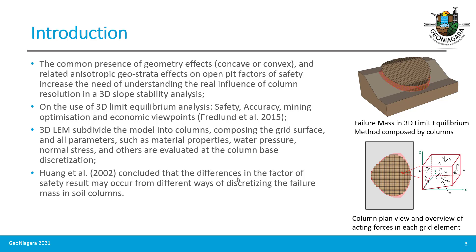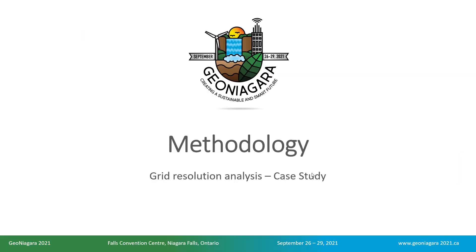The refinement of the grid will certainly influence the sliding mass shape and consequently the factor of safety. Some studies have concluded that differences in the factor of safety result may occur from different ways we discretize the failure mass into soil columns. All the columns defined will compose the grid surface used in the limit equilibrium calculation.